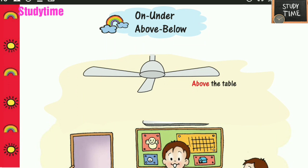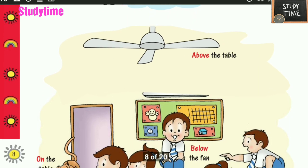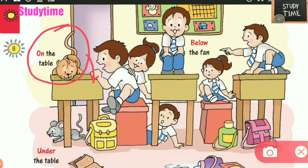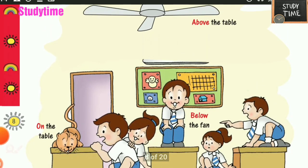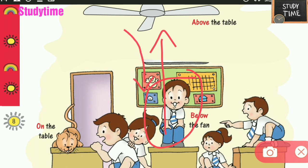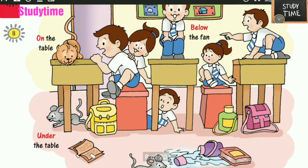Next: on, under, above, below. If an object is placed very near, we say on or under. If it is placed at some distance, we say above or below. This cat is on the table because it is touching the table and is very near to the surface. This mouse is under the table because it is also touching the table. This fan is above the table because it is at a distance from it. This boy is below the fan because he is at a distance from the fan. So we say above, below, on, or under based on where the object is present.